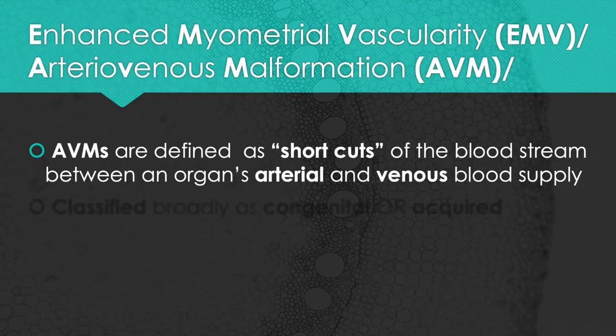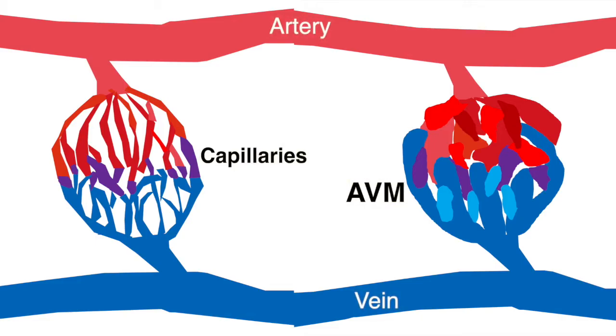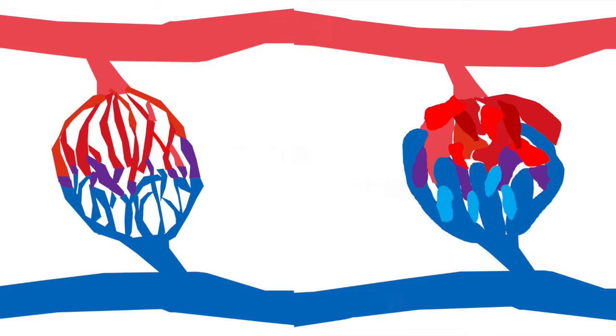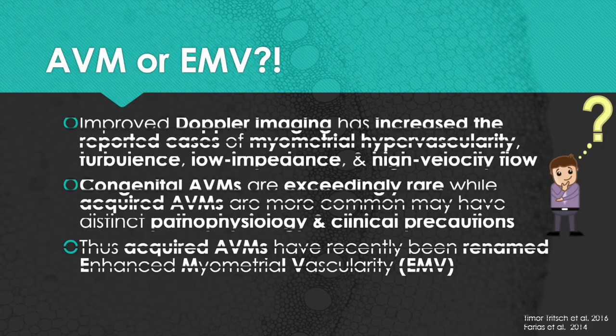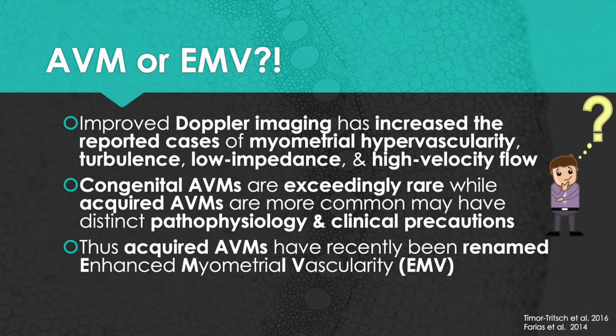AVMs are defined as shortcuts of the bloodstream between an organ's arterial and venous blood supply. They are classified broadly as congenital or acquired. Improved Doppler imaging has increased the reported cases of myometrial hypervascularity, turbulence, low impedance, and high velocity flow. Congenital AVMs are exceedingly rare, while acquired AVMs are more common and may have distinct pathophysiology and clinical precautions.